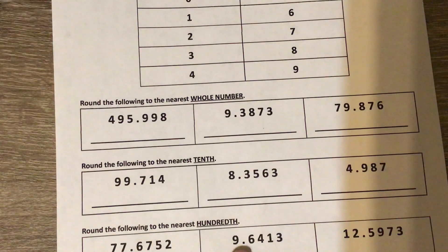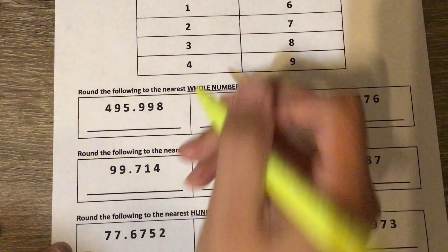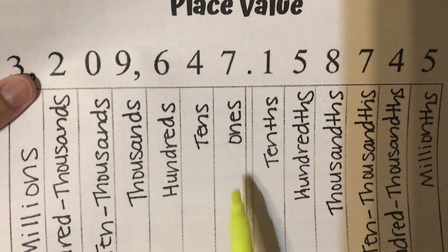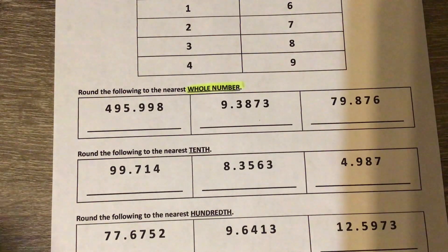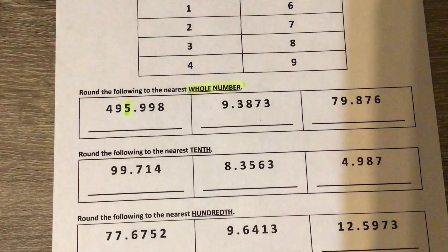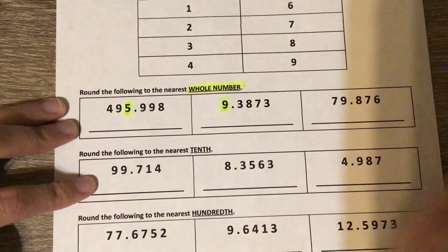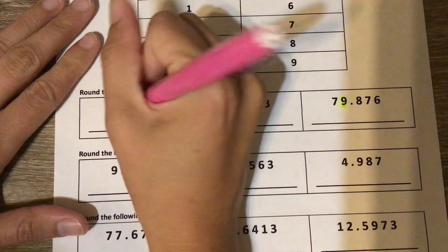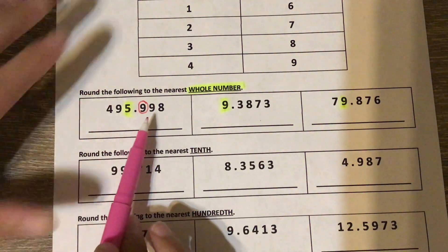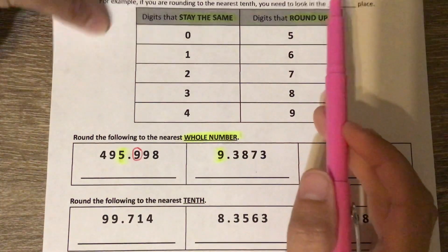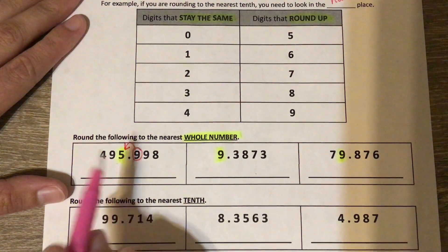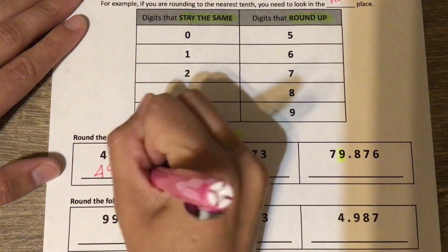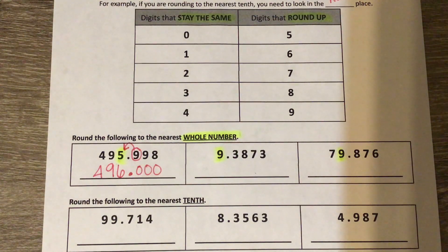Let's look at example one — rounding to the nearest whole number. I'm going to highlight 'whole number,' which means we're talking about the ones place, the digit just to the left of the decimal. The five is in the ones place, and the nine to the right tells me I need to round up. So the five rounds up to six. Everything to the left stays the same, and everything to the right becomes zero — or we could just write that as 496.